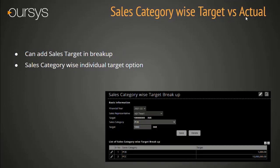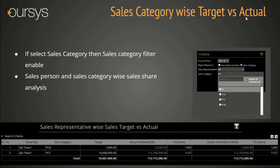Under the Sales Representative-wise Sales Target Master, once you click on the Add button, you can add a breakup tab. You will find a Sales Category-wise Target Breakup option. Here you can set Category-wise Breakup against each representative. It will help you to monitor Sales Category-wise sales progress as well. You can see how the report works as per the Sales Category-wise filter. We have given multiple category selection option with the salesperson. Once you select the category, system will show you the target vs. actual invoice and order value. This report is also helpful to management to set incentives for the salesperson.